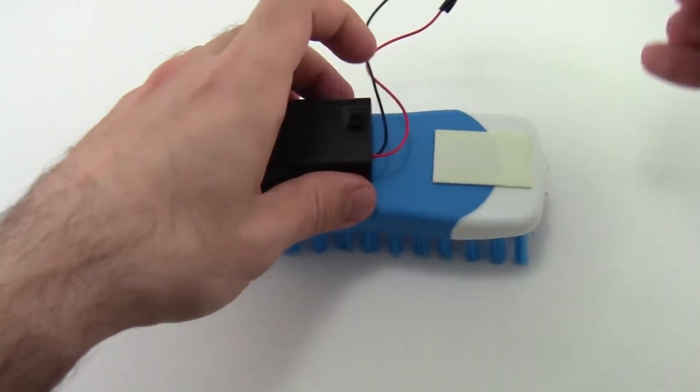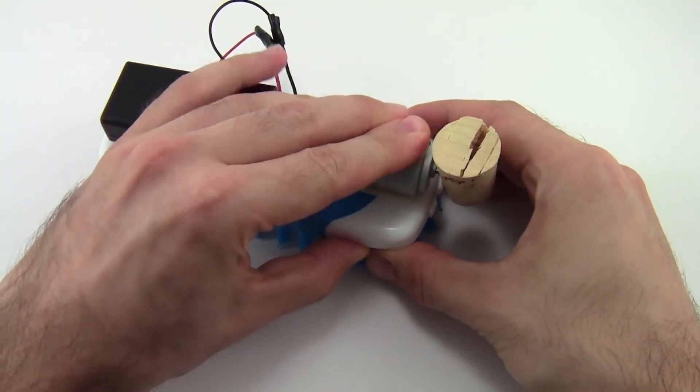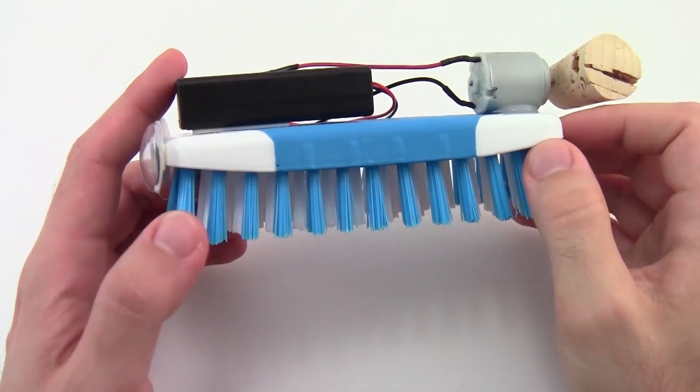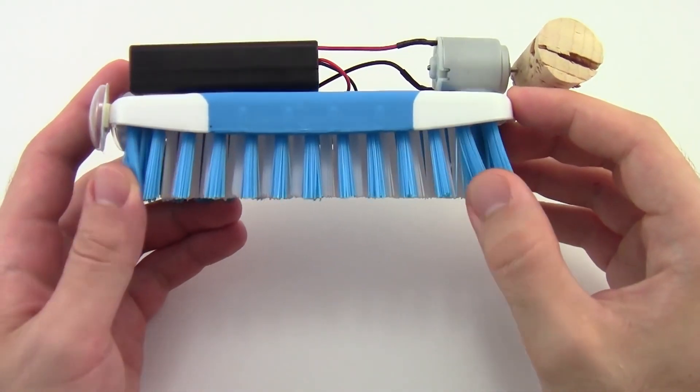You can find these materials in any electronics store or online. You can also decorate your BrushBot with googly eyes, stickers or markers to give it some personality.